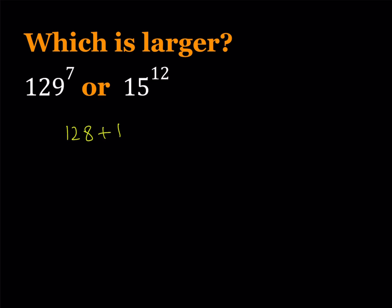And I can write it as 128 plus 1 to the 7th power. And this kind of gives us an idea about how we can compare these numbers, because powers of 2 are pretty common. And not only that, we also have 15 to the power of 12, and 15 as a base is also close to a power of 2. If you think about powers of 2, 2, 4, 8, 16, 32, 64, 128, 256, you'll notice that 129 is 1 more than a power of 2, and 15 is actually 1 less than a power of 2.